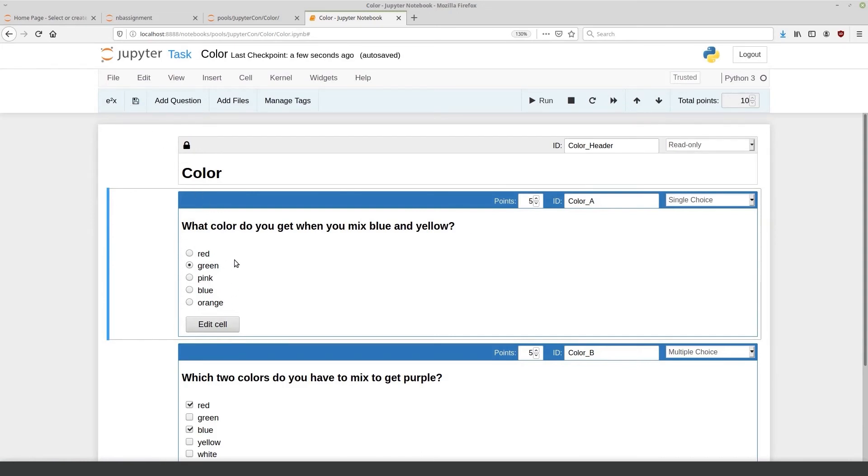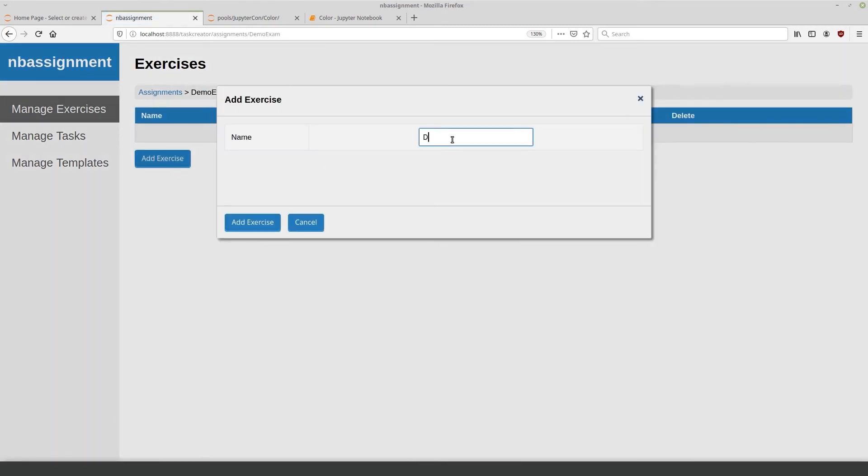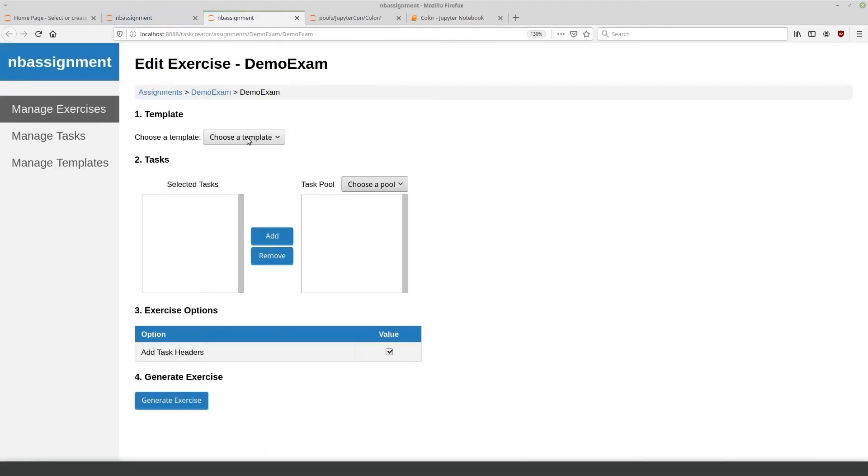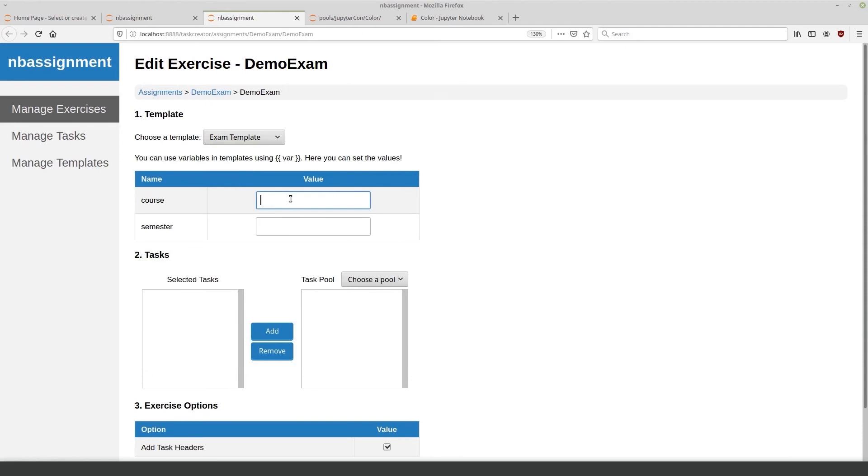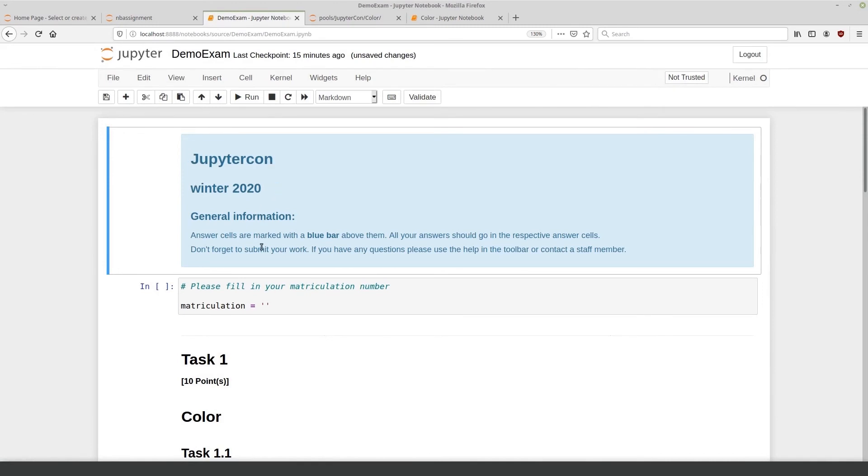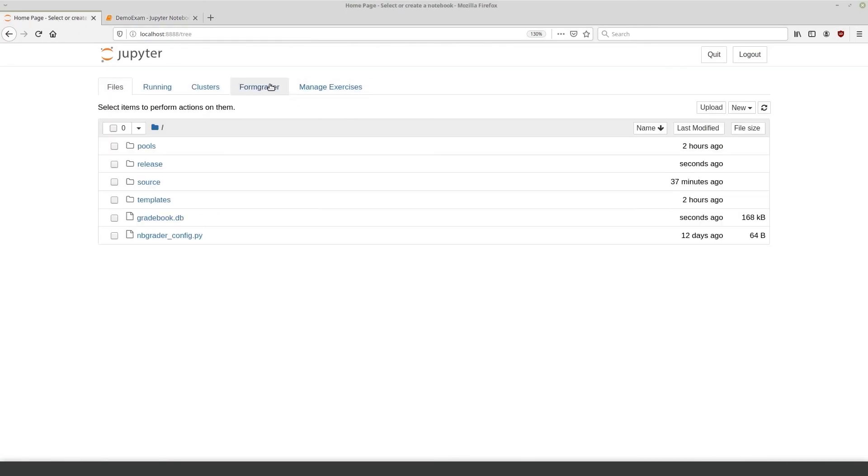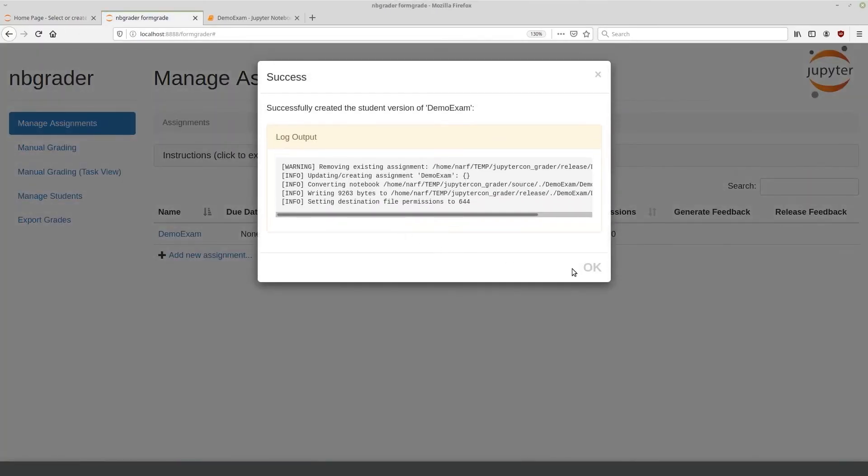Now, after creating our tasks and templates, we can create an exercise. I already created an assignment using NBGrader, and for this we will create an exercise sheet, which is basically just a single Jupyter notebook, which we will call DemoExam. First thing we do is we choose our template from before and we fill in the variables. So, let's call the course JupyterCon and let's call the semester Winter 2020. Next, we choose our tasks from the JupyterCon task pool. We take both of them, add them, and generate the exercise. We can see the variables have been replaced and all the tasks are in here. Now, after we generated our exercise, the last step is to go back to NBGrader, to the FormGrader tab, generate our assignment and release it to the student.